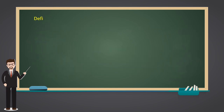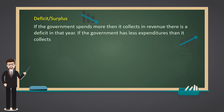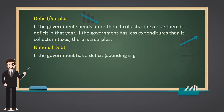If the government spends more than it collects in revenue, there is a deficit in that year. If the government has less expenditures than it collects in taxes, there is a surplus. If the government has a deficit — spending is greater than revenue — it will fund the difference by borrowing money and issuing national debt.